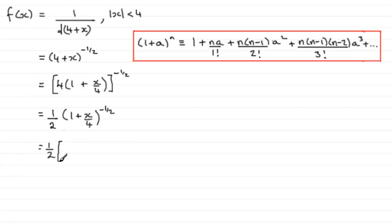We've got the half at the front here, let's put a big square bracket up. Then it's 1 plus n times a, so it'd be 1 plus the power n, minus a half, multiplied by a, which is x/4, and that's all over factorial 1, or factorial 1 is just 1 so I won't bother with that.